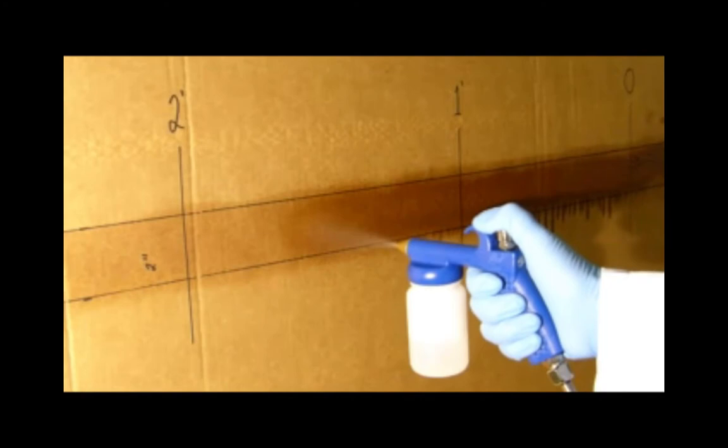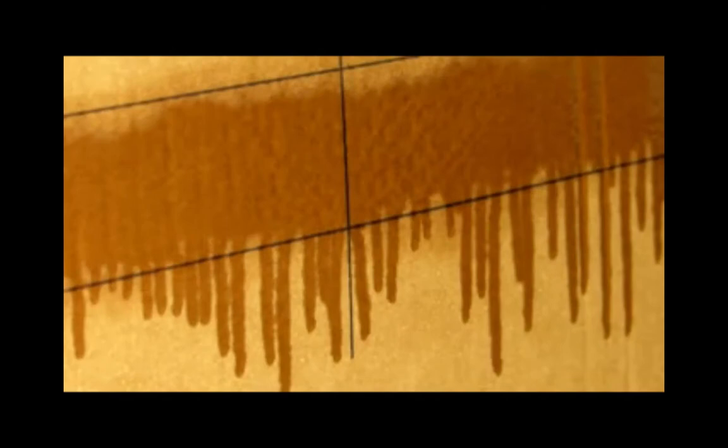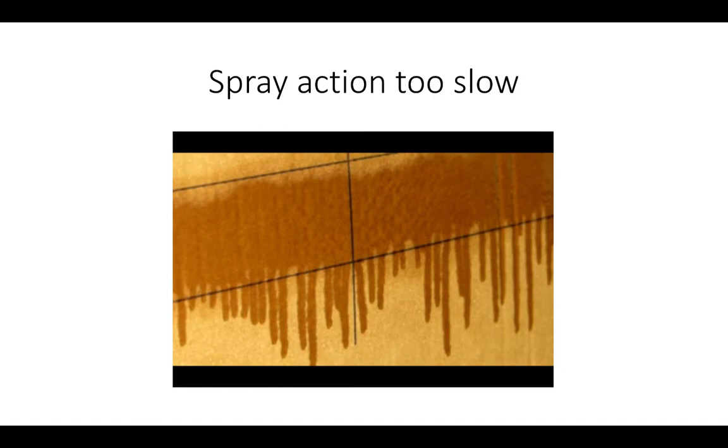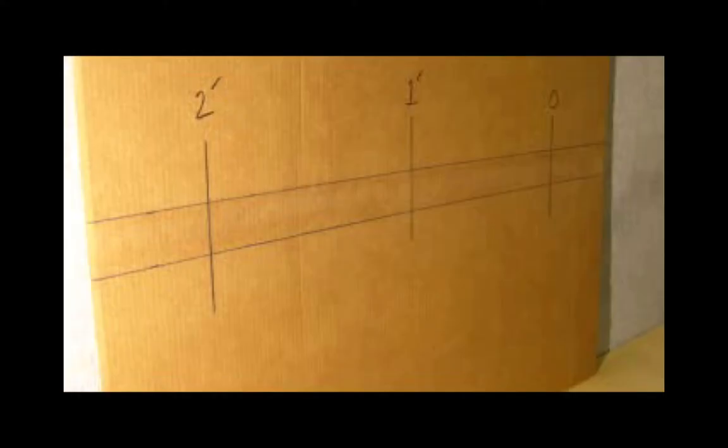If the spray gun is moved too slowly across the target surface, the oil formulation may start to drip. On some surfaces, depending on the lighting conditions, the spray drips may also be visible even after the spray has dried. Applying the product too slowly will consume more product than necessary and result in higher costs of application.